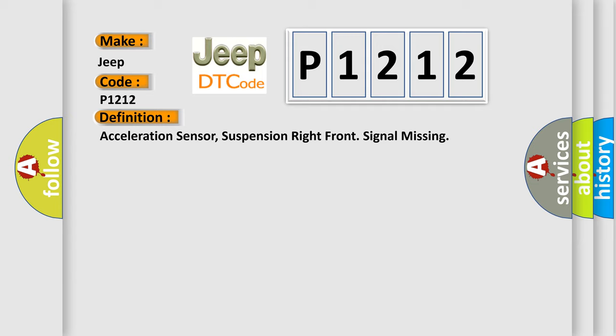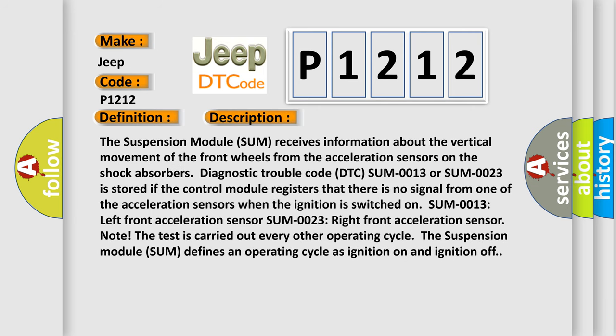And now this is a short description of this DTC code. The suspension module (SUM) receives information about the vertical movement of the front wheels from the acceleration sensors on the shock absorbers. Diagnostic trouble code DTC SUM-0013 or SUM-0023 is stored if the control module registers that there is no signal from one of the acceleration sensors when the ignition is switched on.